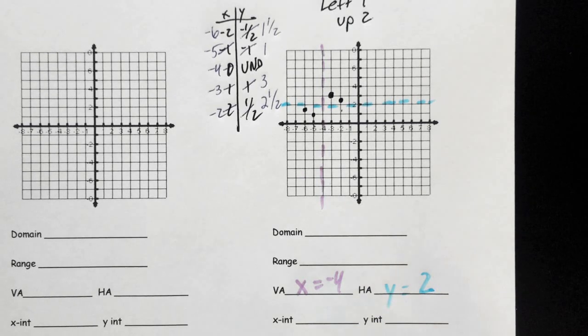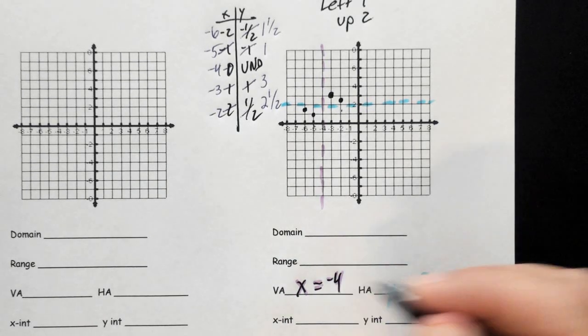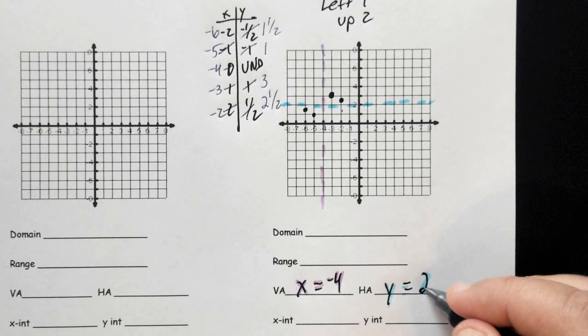So now, and again, remember, when we ask for the asymptotes, we want equations: x equals and y equals. That is important because you can't just give the numbers. We want you to make sure you write it properly.